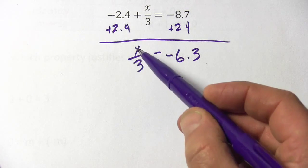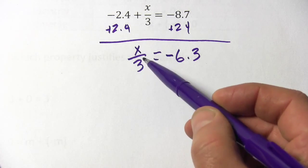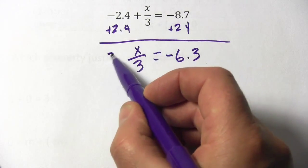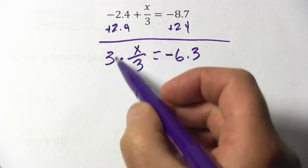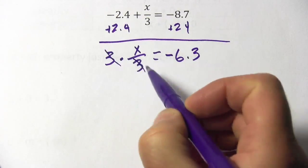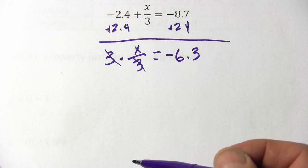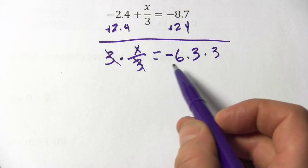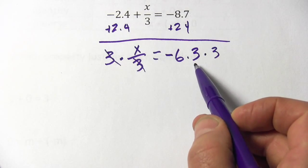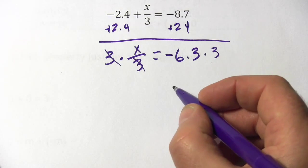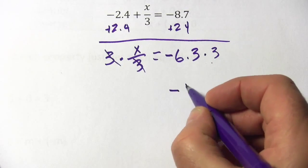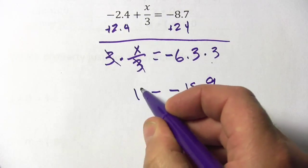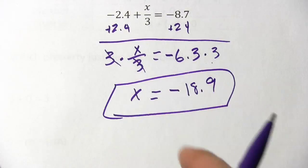This x over 3 is the same as x divided by 3. So to undo that, we can multiply by 3, and these 3's will just cancel, leaving x alone. We have to do that to both sides, so we get negative 6.3 times 3. That's going to be negative 18.9, and that is our answer.